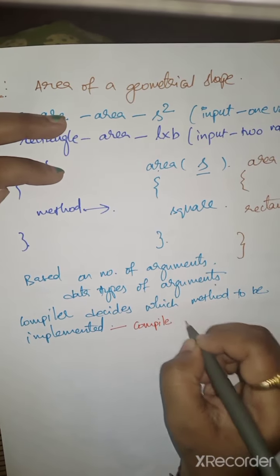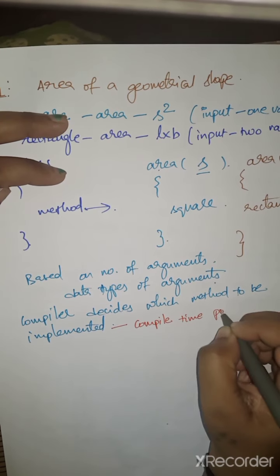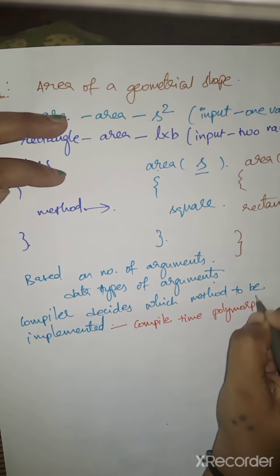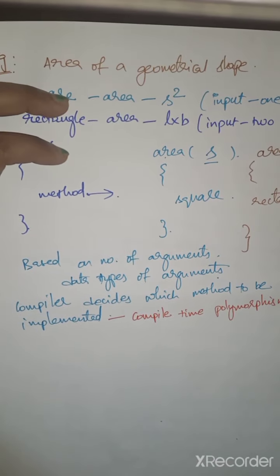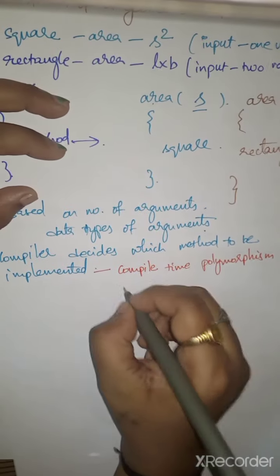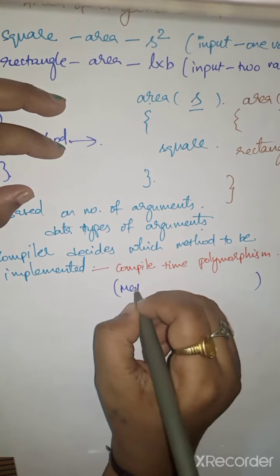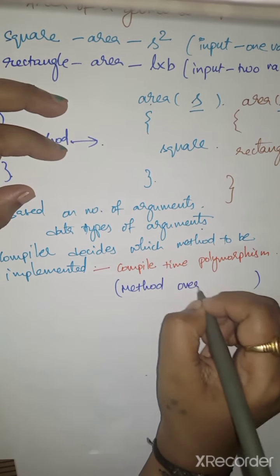This comes under compile-time polymorphism, and you will learn this in detail in next coming lectures under method overloading.